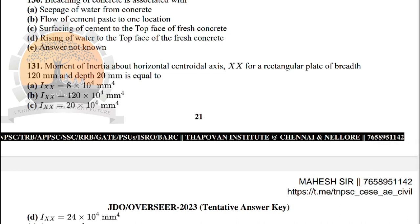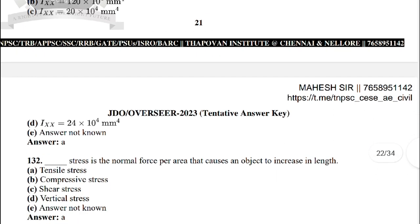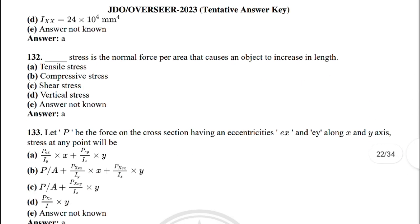Next: moment of inertia about the horizontal centroidal axis for a rectangular plate of breadth 120 mm and depth 20 mm is equal to — the correct answer is option A: Ix = 8 × 10⁴ mm⁴.